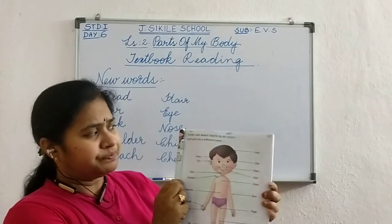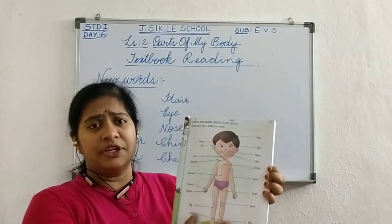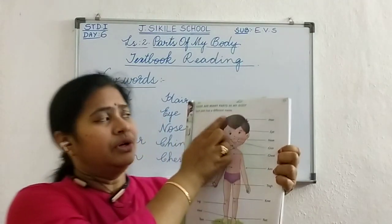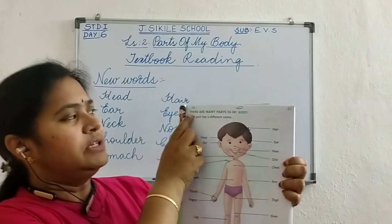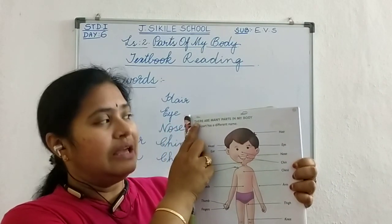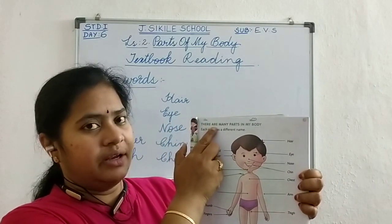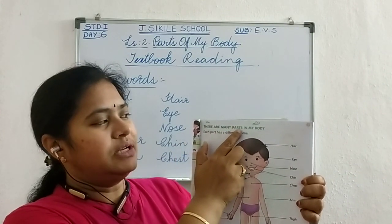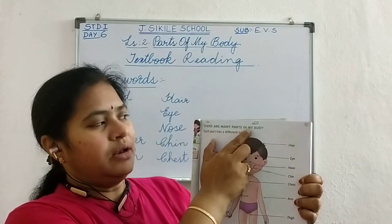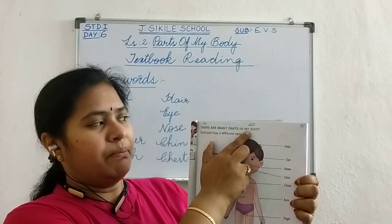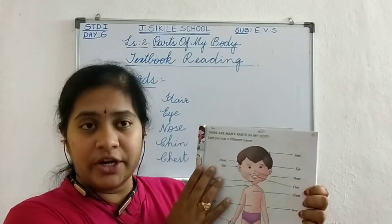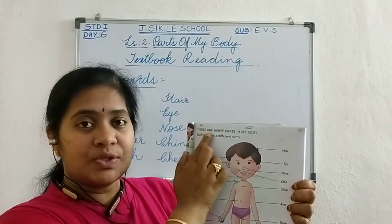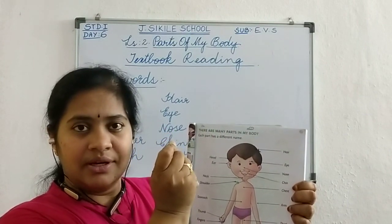Now in this page we have different new words. Here first, green letters — we will read now. See here. T-H-E-R-E. There. A-R-E. Are. M-A-N-Y. Many. P-A-R-T-S. Parts. I-N. In. M-Y. My. B-O-D-Y. Body. If you don't know, you can read the spelling and make a word like that.